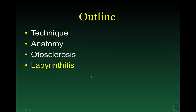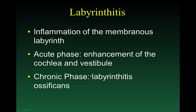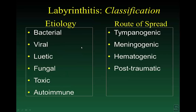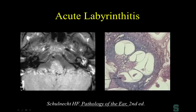Now let's talk about labyrinthitis — inflammation of the membranous labyrinth. There's an acute phase and a chronic phase. The acute phase is classified by the causative organism: bacterial, viral, syphilitic, fungal, toxic, or autoimmune. It can also be classified by route of spread: tympanogenic from the middle ear, meningogenic from the brain, blood-borne, or post-traumatic.